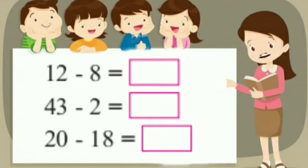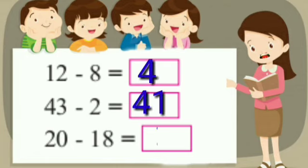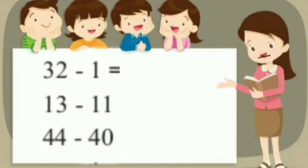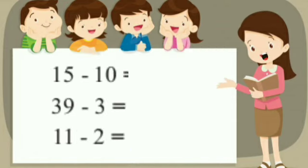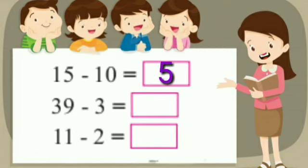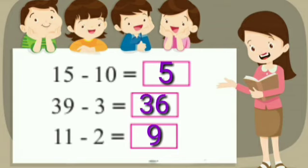Let's solve some more examples. 7 minus 6, 14 minus 7, 20 minus 8. Also: 3 minus 2, 13 minus 11 is equal to 2, 44 minus 40 is equal to 4, 15 minus 10 is equal to 5, 39 minus 3 is equal to 36, 11 minus 2 is equal to 9.